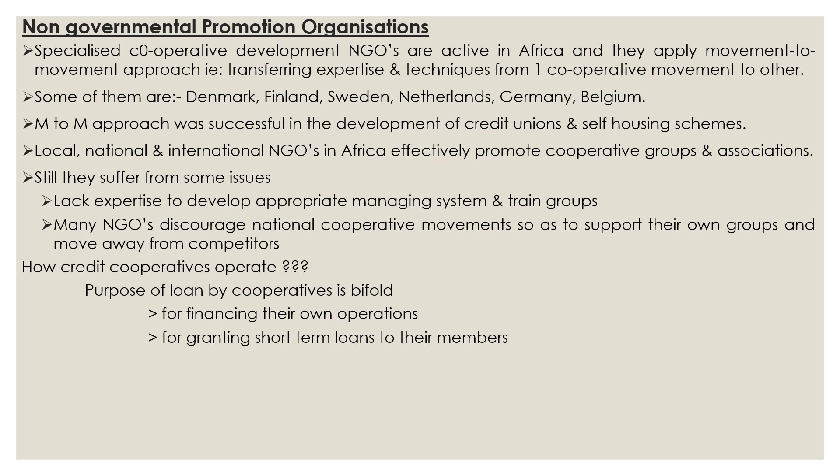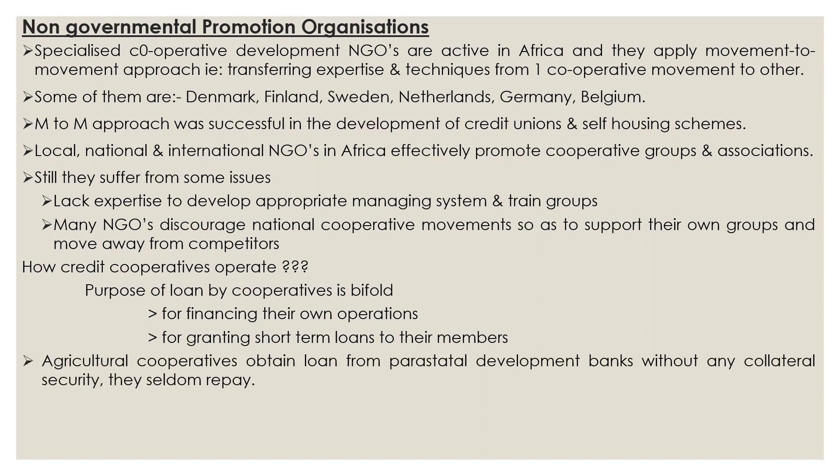The main practice of agricultural cooperatives is to obtain loans from parastatal development banks — government-owned or government-sponsored banks — without any collateral security, and they seldom repay. This is one of the main reasons for agricultural cooperative failure in Africa: they received abundant funds from government banks without collateral security and were not forced to repay loans on time.